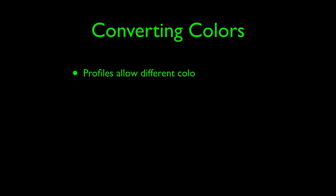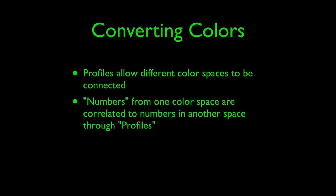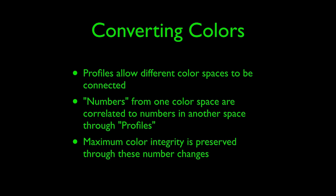While we know that color rendering will change through any conversion process that takes us from one color space to another, we still need some way to connect the colors in one space to the colors in another in a meaningful way. This is where color management profiles come in. This connection process correlates the numbers of one color space to the numbers of another through profiles that describe how the numbers in each color space represent color. By using these profile descriptors, maximum color integrity is preserved by changing the numbers according to the colors those numbers represent.